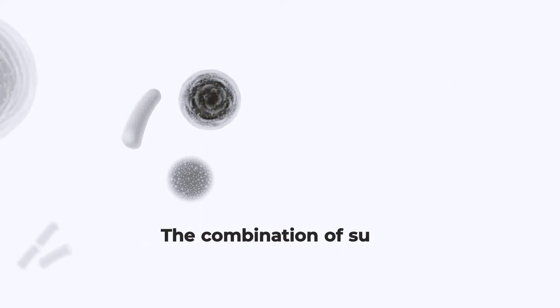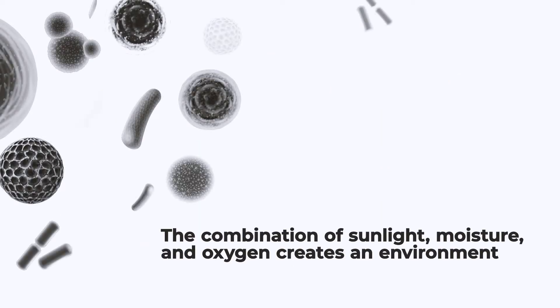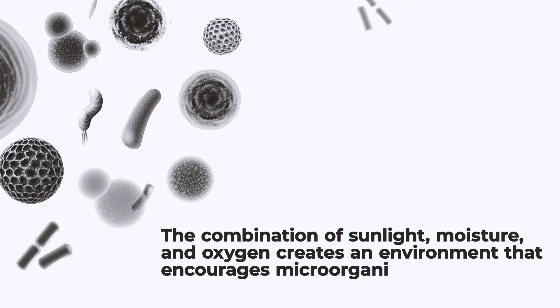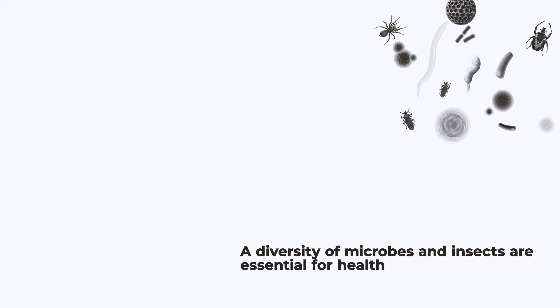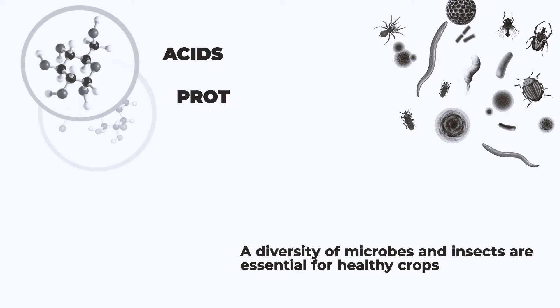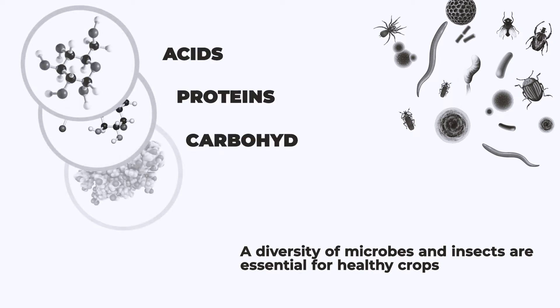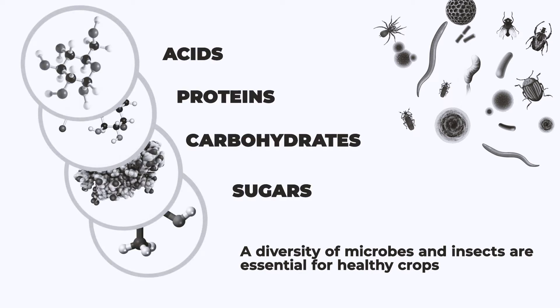Sunlight, moisture, and oxygen create an environment that encourages microorganisms to multiply. A diversity of microbes and insects are essential for healthy crops. As the microorganisms eat the organic material, they leave acids, proteins, carbohydrates, and sugars in the soil, and these are quickly utilized by developing plants.